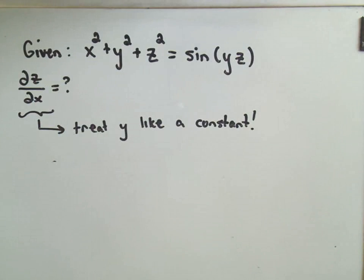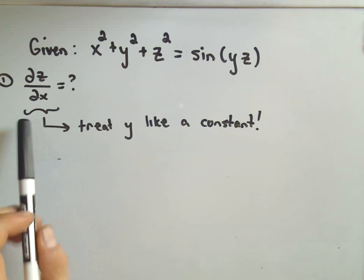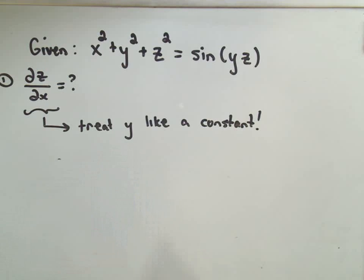So let's actually do this problem here. So I've got a little note here. So here's our function x² + y² + z² = sin(yz). So the first one I'm going to do is I'll find the partial of z with respect to x. And when we're doing this, the variable you don't see, which is y, what we're going to do is we're going to treat y like a constant.